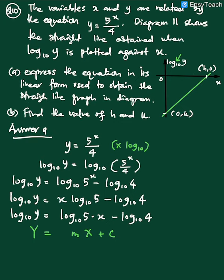So now you can see clearly, your Y, your X, your gradient, and your C. And this is the answer for this question. Okay, express the equation in its linear form to obtain for the straight line graph there. So how you know that, because from here, this is our Y and this is our X axis, Y axis and X axis. Okay, same.